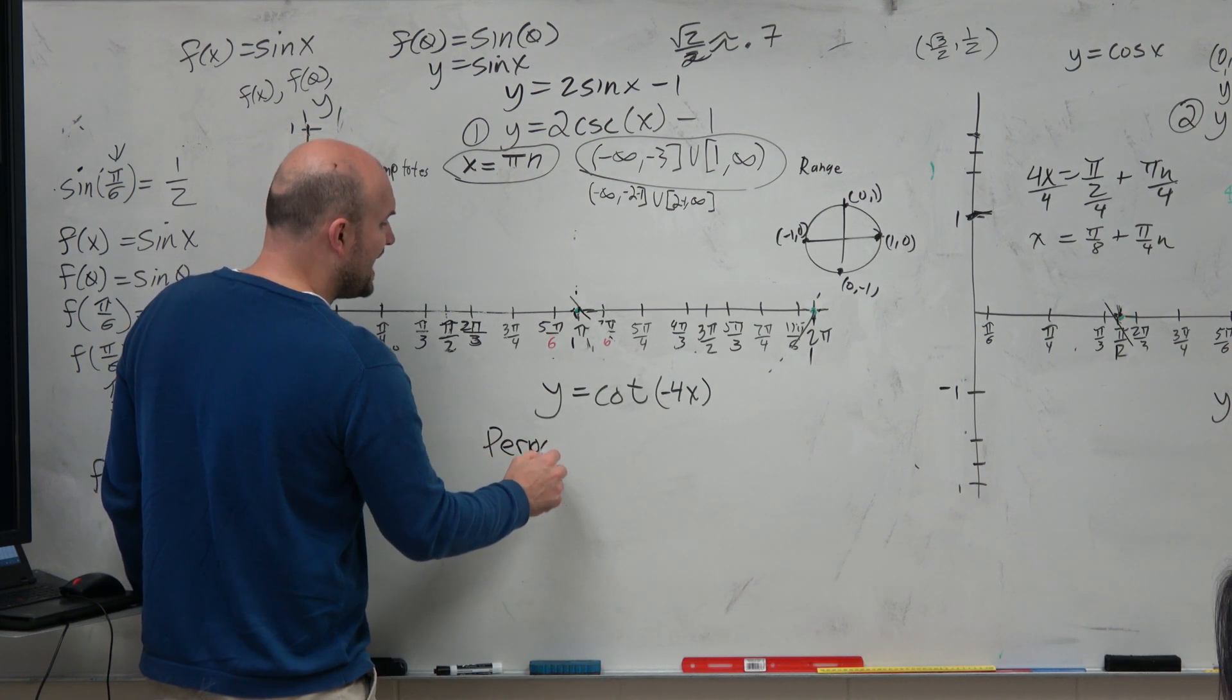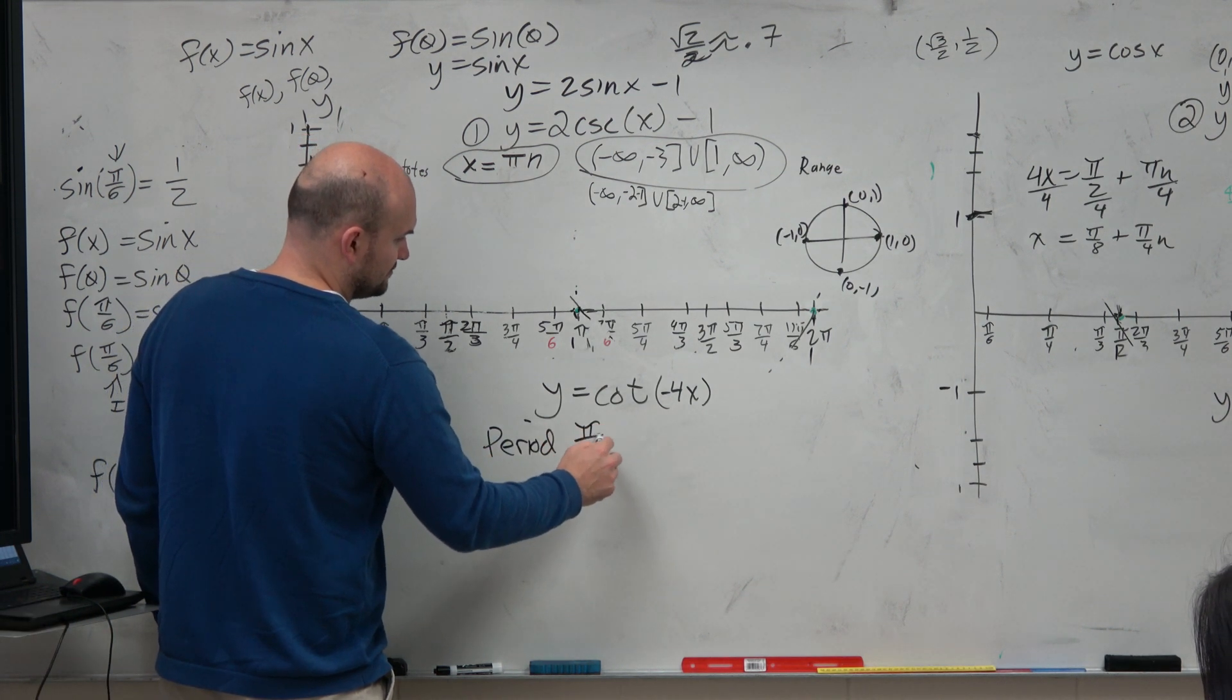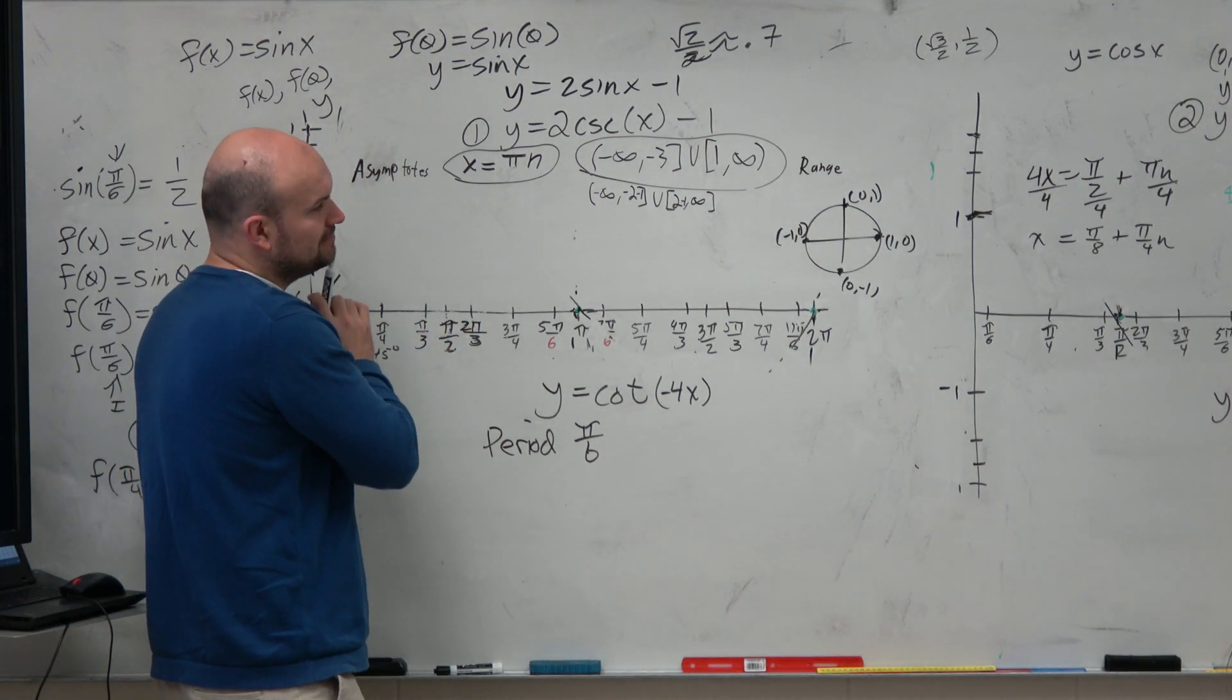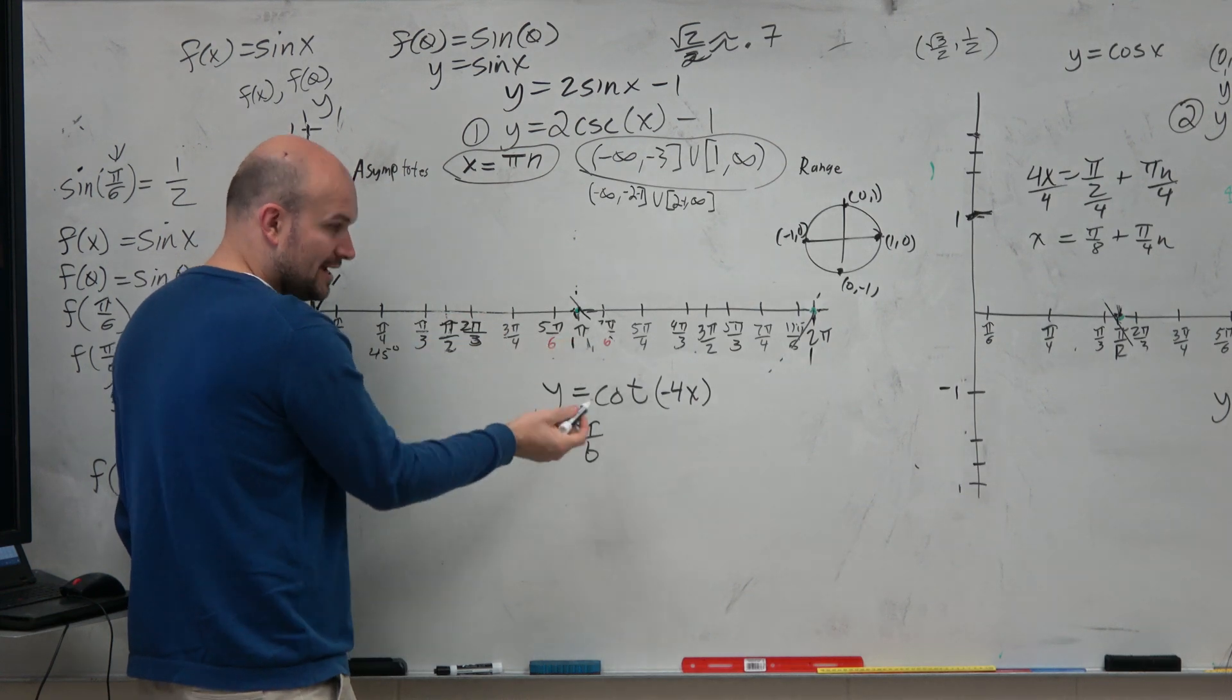The period, just remember guys, the period is pi divided by b, right? Not 2pi like everything else. Sine and cosine. Tangent and cotangent is pi over b.